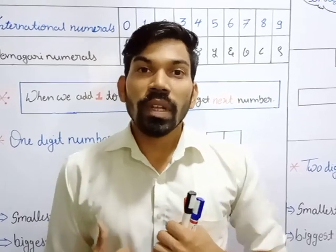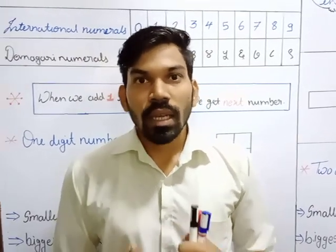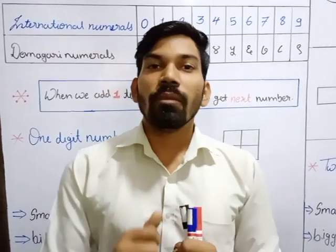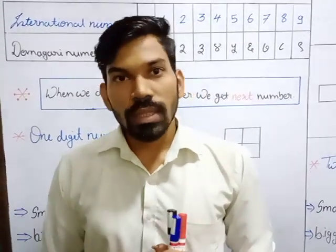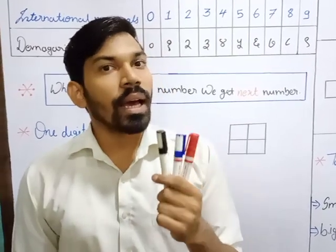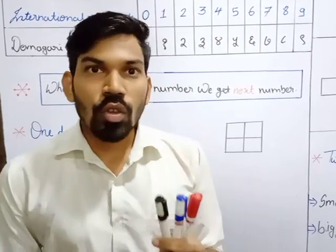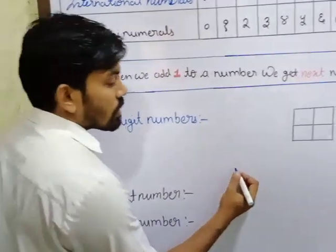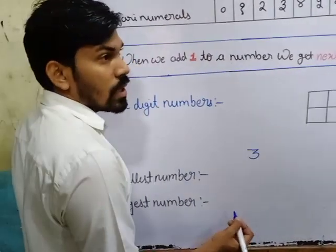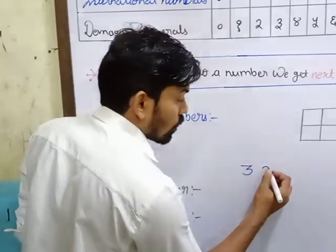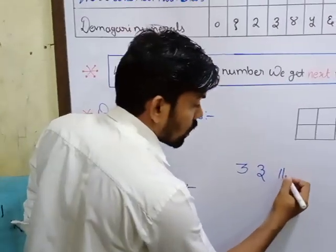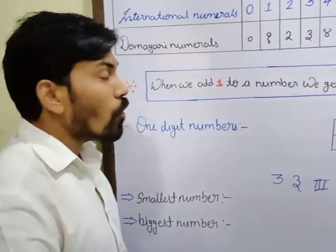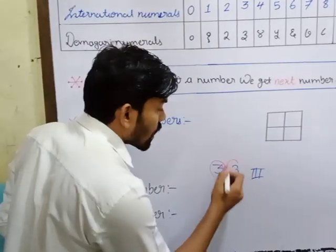What we have done in our previous chapter is Roman Numerals. Whenever we are talking about these numerals, the value of the numerals will be the same — only the form is going to change. As I said, I have these 3 markers. If I want to write 3 in International Numerals, I would write 3. The same 3 in Roman would be III. So the value of all these 3 numerals will be the same.